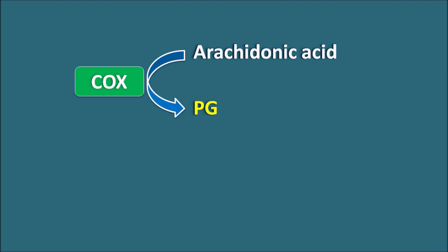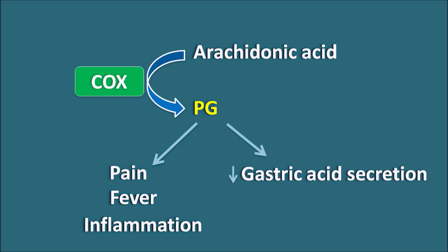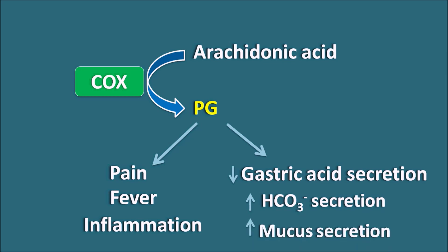During inflammatory conditions, prostaglandins are synthesized and play pathological roles. They can produce pain and nociception, increase fever and hyperthermia, and induce inflammation. At the same time, prostaglandins also have protective actions, particularly at the stomach: they decrease gastric acid secretion and increase bicarbonate and mucus secretion. This balance is mediated by the important prostaglandin PGE2.